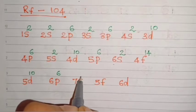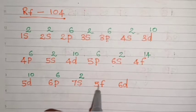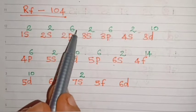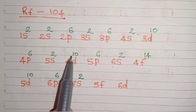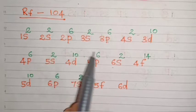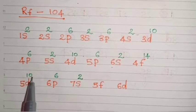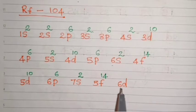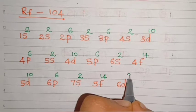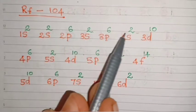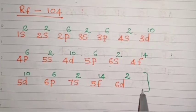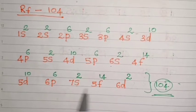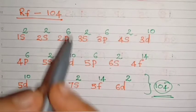6s2. And the next one is 5f. Before coming to 5f, let's count the number of electrons: 2, 4, 6, 10, then 20, then 30 — we have to count the number of electrons. That means 104 electrons are there in total. We need to count how many electrons are left towards the end. We write 5f14. Then in 6d, we fill the remaining electrons in order of 6d. This is the electronic configuration for Rutherfordium with atomic number 104.